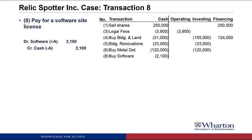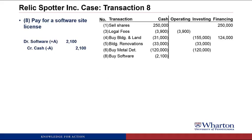We skip transaction seven because that was a non-cash transaction where Relic Spotter purchased inventory on account. Moving to transaction eight, Relic Spotter paid $2,100 cash for a three-year software site license. The answer is an investing cash outflow of $2,100, because we're investing in a long-term asset for more than a year.